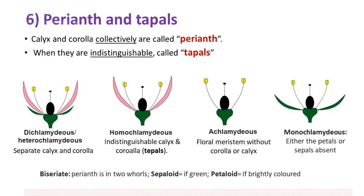Calyx and corolla collectively are called the perianth. When they are indistinguishable, we call them tepals. Depending on their arrangement or fusion, we can name them in different ways. Dichlamydeous or heterochlamydeous means separate calyx and corolla. Homochlamydeous means indistinguishable calyx and corolla, or tepals. A floral meristem without corolla or calyx is named as achlamydeous. Flowers without either petals or sepals are called monochlamydeous.